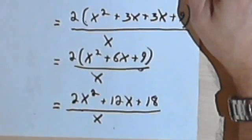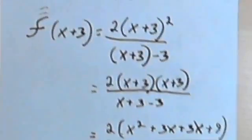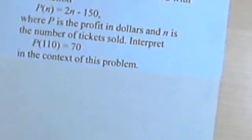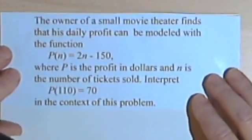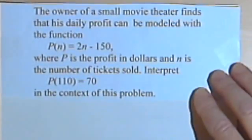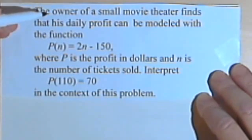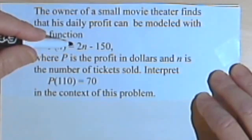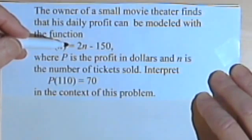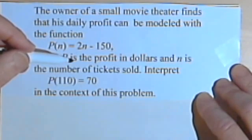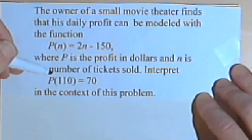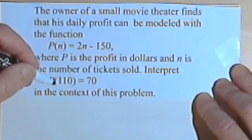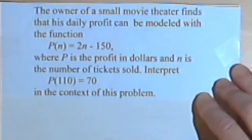Now I just want to take a second and talk about word problems. So here's a typical word problem you might run into when you're dealing with functions. The owner of a small movie theater finds that his daily profit can be modeled with the function p of n equals 2n minus 150, where p is the profit in dollars and n is the number of tickets sold. Interpret p of 110 equals 70 in the context of this problem.